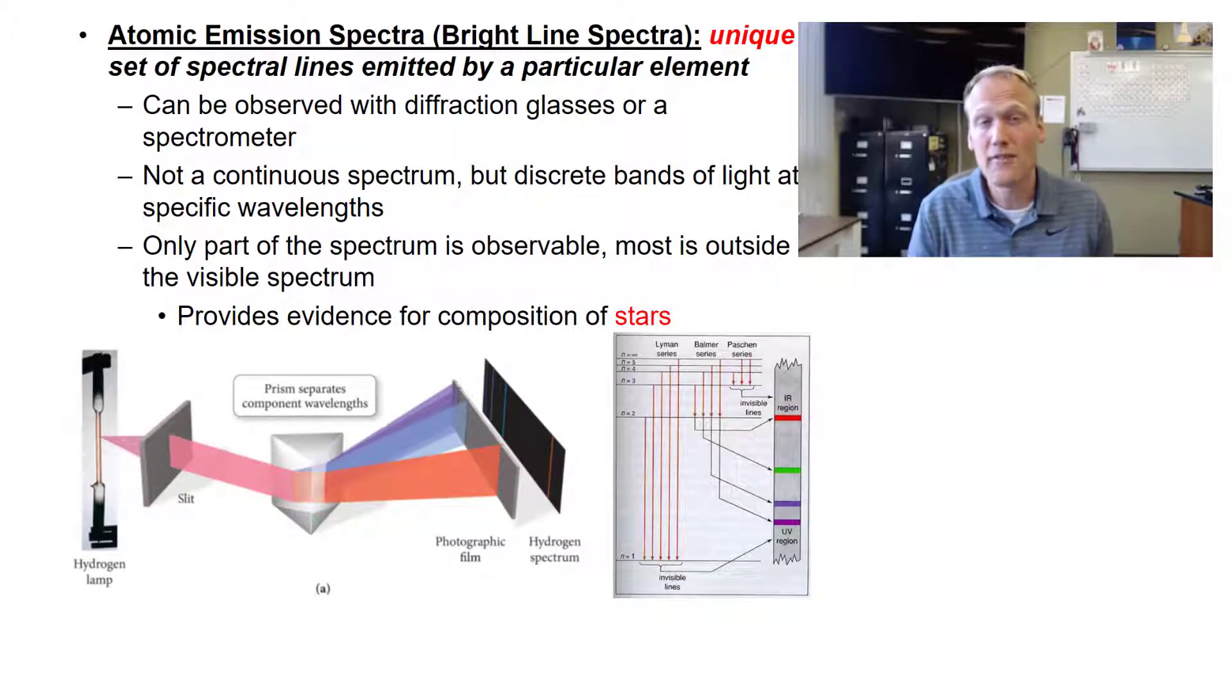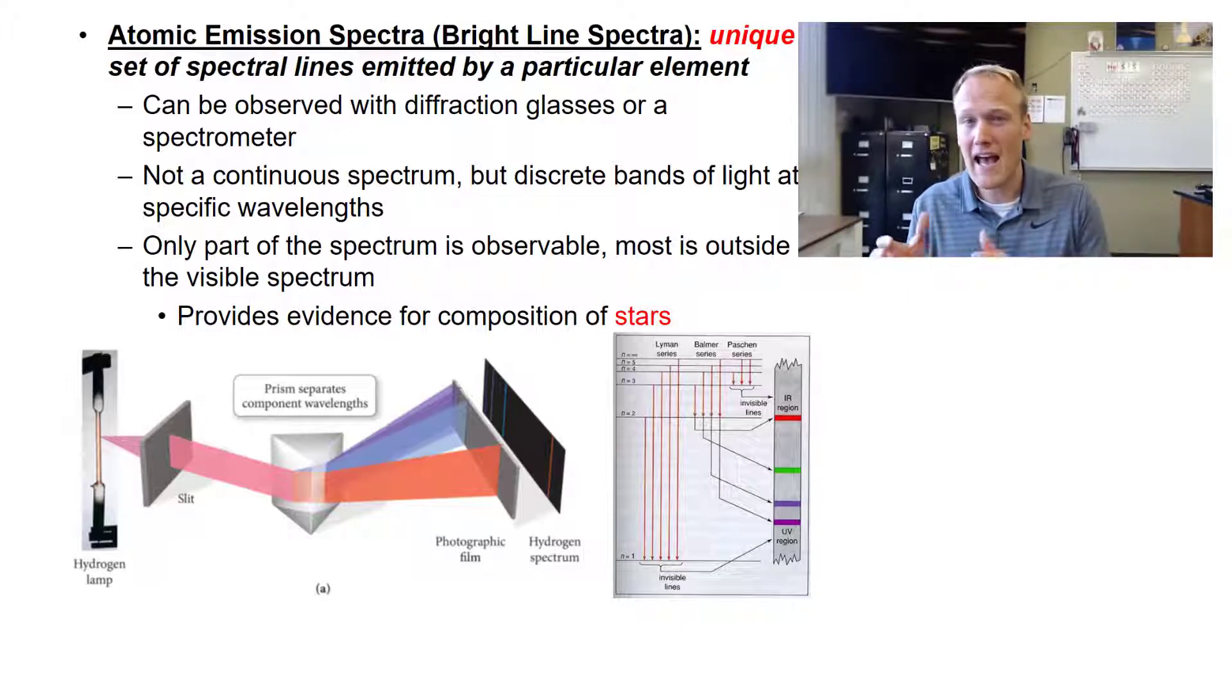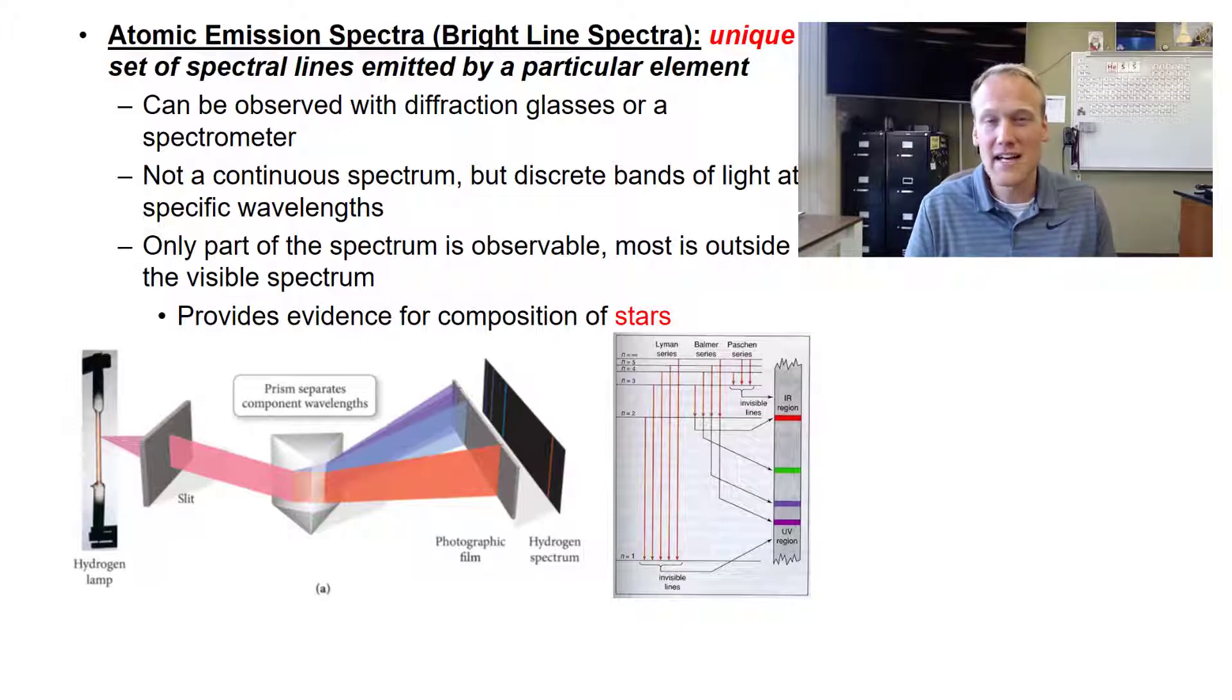These colors are what we call the atomic emission spectra. They are unique for every element. As long as you energize the electrons of any atom, you're going to get a unique spectra based on that atom. That's really important because it helps us identify elements based on their unique atomic emission spectra.